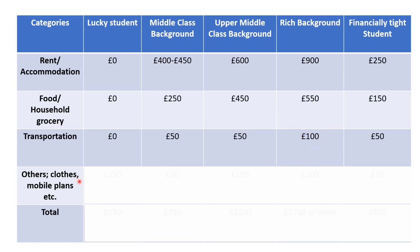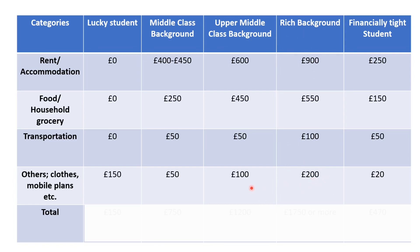Moving on to the fourth category: all other small expenses — buying some clothes, mobile plans, and so on. For the lucky student, I've included £150. For the middle class background, I've put £50 — for example, if you have lab classes, you might purchase lab coats, calculators, or mobile plans. For the upper middle class background, I've put £100, and for the rich background, £200, as the things they buy tend to be more expensive, including clothes. For the financially tight student, £20 is still manageable.